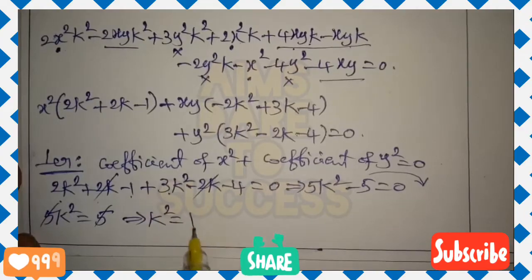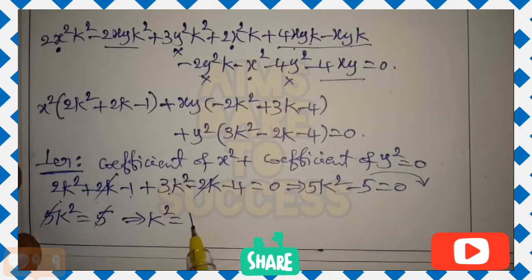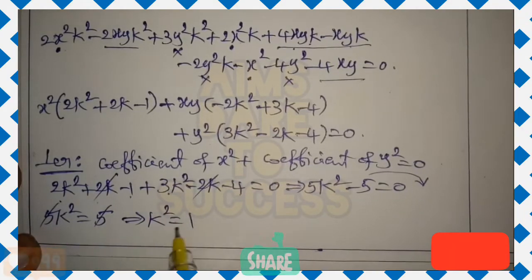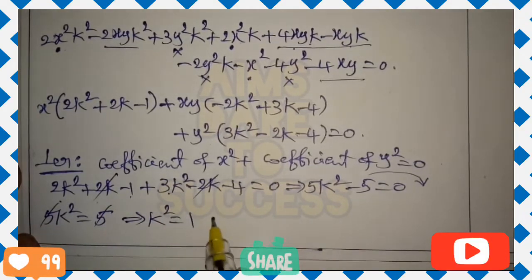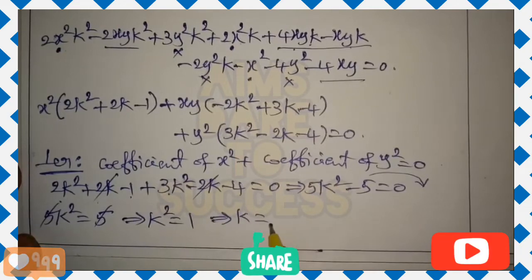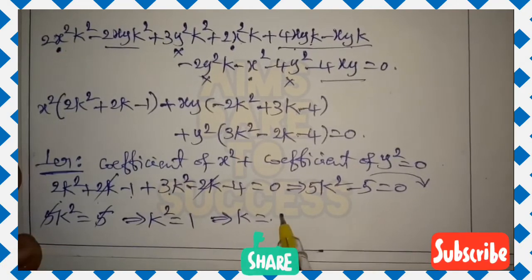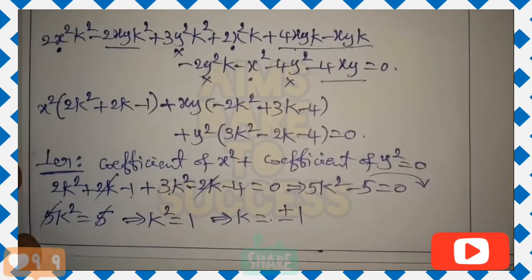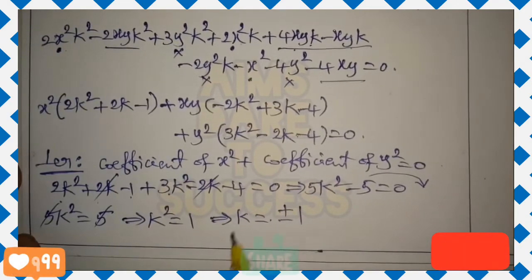So 5k² = 5, the 5s cancel, giving k² = 1, therefore k = ±1.